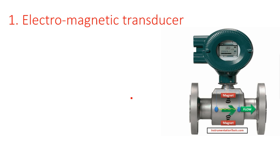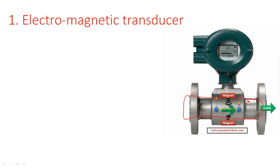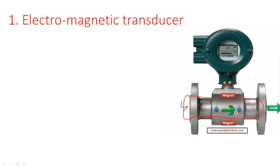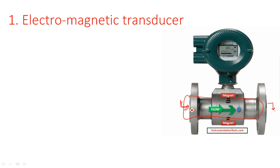The electromagnetic transducer diagram shows a hollow area where a fluid can flow through. If I want to measure the velocity of a liquid, that liquid is allowed to pass through this hollow shape — marked in red — where liquid enters on one side and comes out the other.